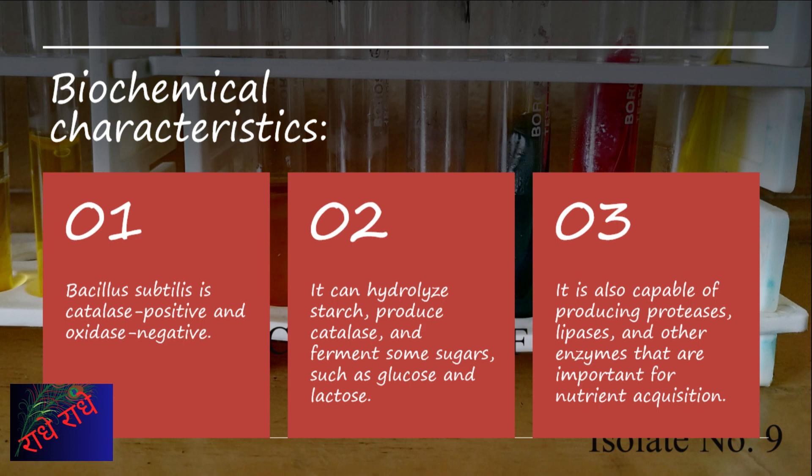Bacillus subtilis is a gram-positive bacterium found in various environments, including soil and the digestive tracts of animals. With a range of biochemical characteristics, it is a valuable microorganism to study. It is catalase-positive and oxidase-negative, meaning it can break down hydrogen peroxide but cannot use oxygen for respiration. Furthermore, it can hydrolyze starch, produce catalase, and ferment sugars such as glucose and lactose. Additionally, it is capable of producing proteases, lipases, and other enzymes essential for nutrient acquisition.